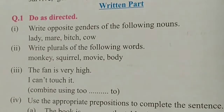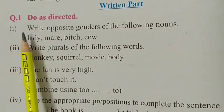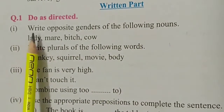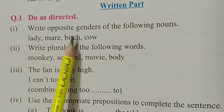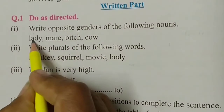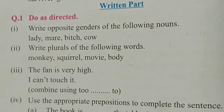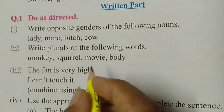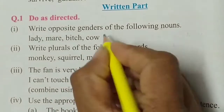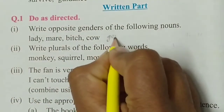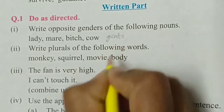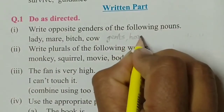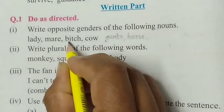The first one is write opposite genders of the following nouns — we have to write the opposite gender of these words. Lady: the opposite gender of lady is gents. Second: mayor. Horse: mare. Bitch is the opposite of dog, and cow is the opposite of bull.